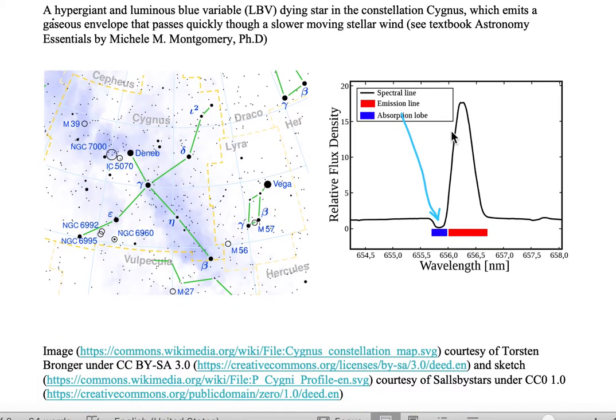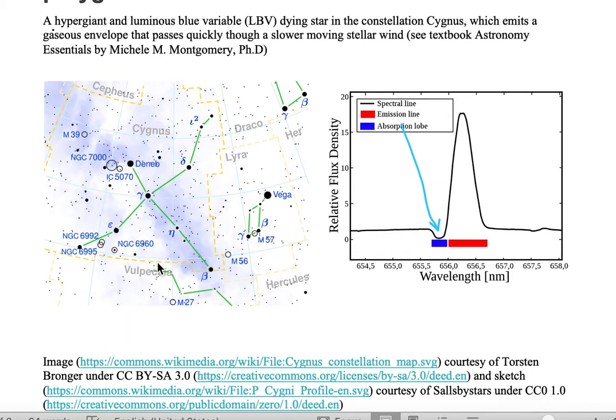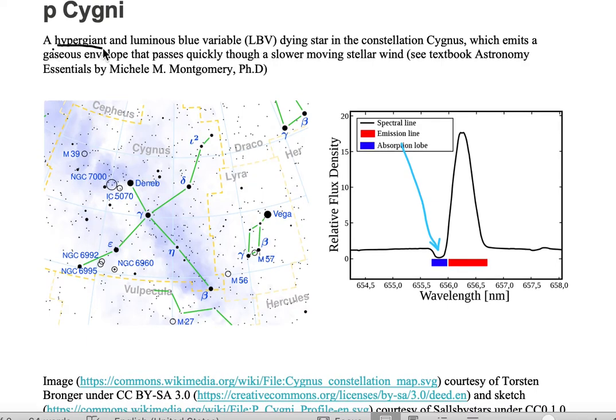First of all, P. Cygni is an object that's emitting in the constellation of Cygnus. It is classified as both a hypergiant and a luminous blue variable.